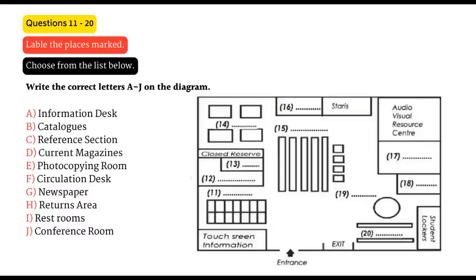These computers can be used at any time to get general information about the library and how it works. In front of the touchscreen information service are the catalogs. As you can see, it's a computerised catalogue system and it's very easy to use. The catalogues are linked up to the other libraries at the university, so make sure you check which library a book is in when you are trying to locate a particular item.